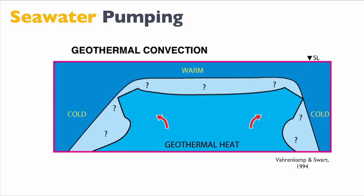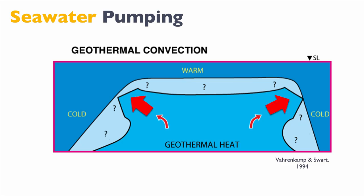In the marine realm there are multiple ways to create dolomitization. A pump for fluid is needed — you need to circulate a lot of seawater to lead to dolomitization. The first potential pump is known as the geothermal convection mechanism. Imagine an isolated platform surrounded by cold water. This cold water enters the flank of the platform, but once inside, geothermal heat warms those waters. Once heated, they become more buoyant, rise up, and create a geothermal convection cell that circulates vast amounts of seawater, leading to dolomitization over geological time.